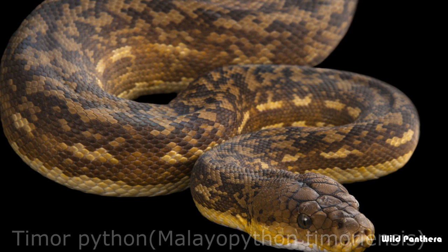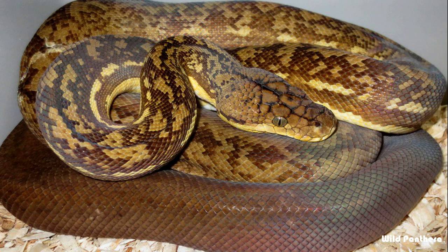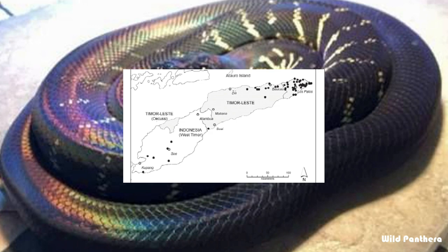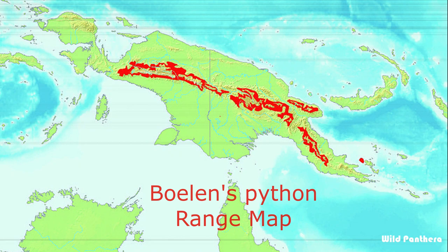Timor Python: The Timor Python is a python species found in Southeast Asia. Like all pythons, they are non-venomous constrictors. Unlike larger species such as the Reticulated Python, they are not considered dangerous to humans. Boelen's Python: This is a non-venomous snake in the family Pythonidae, endemic to the mountains of New Guinea. No subspecies are currently recognized.